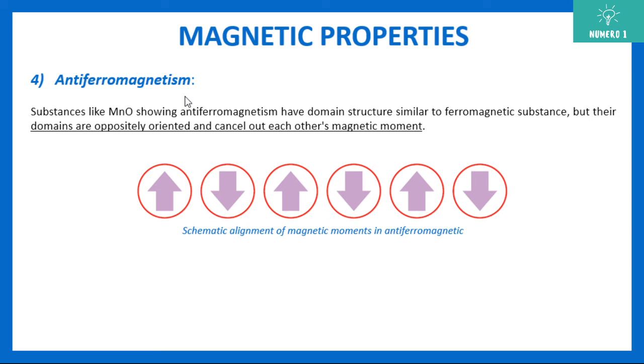Now, apart from this, we have anti-ferromagnetism. Anti-ferromagnetism is the substance where the domains are present, but the domains are cancelling each other's effect. You can see this is upward, downward, upward, downward, upward, downward. So here, the net effect is cancelled. So you can see the domains are oppositely oriented and cancel out each other's magnetic moment. So here there is no magnetic moment, that is anti-ferromagnetism.